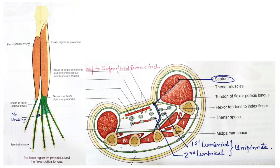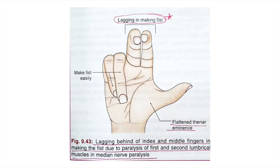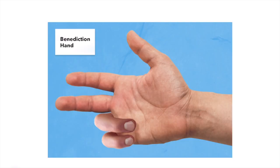Because the long flexor tendons for the index finger are free, you will find much more extension at the index finger and thumb, but less extension at the middle finger. The position seen in the image is called the 'hand of benediction,' also called the benediction sign, or preacher's hand.